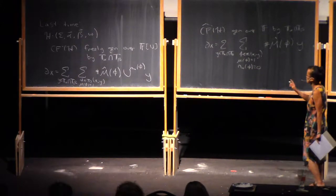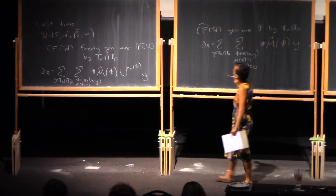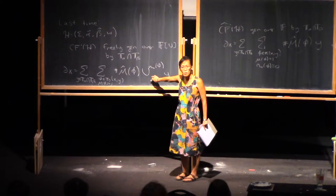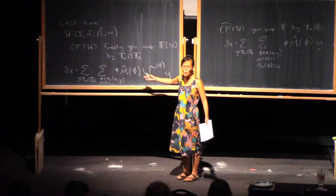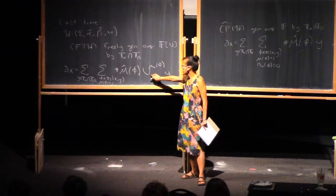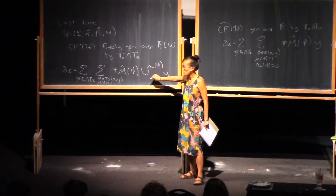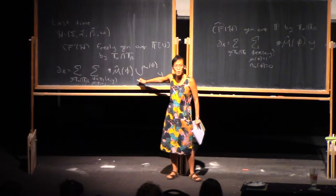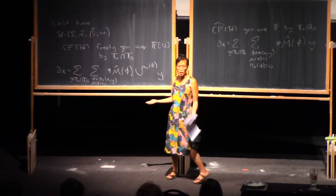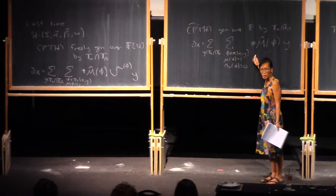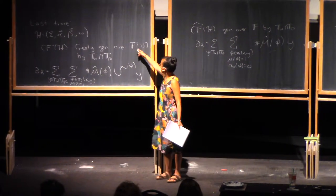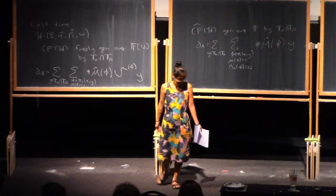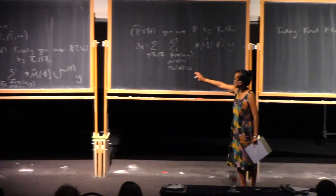If you look carefully at these two definitions, you notice that CF hat can be obtained from CF minus by setting the variable U equal to zero, taking the convention that zero to the zeroth is one. So if you set U equal to zero, that says any time N_W of phi is nonzero it won't count — meaning don't count disks crossing the W base point. And in terms of generators, setting U equal to zero means you're freely generated over the field F. That's how these two chain complexes are related.